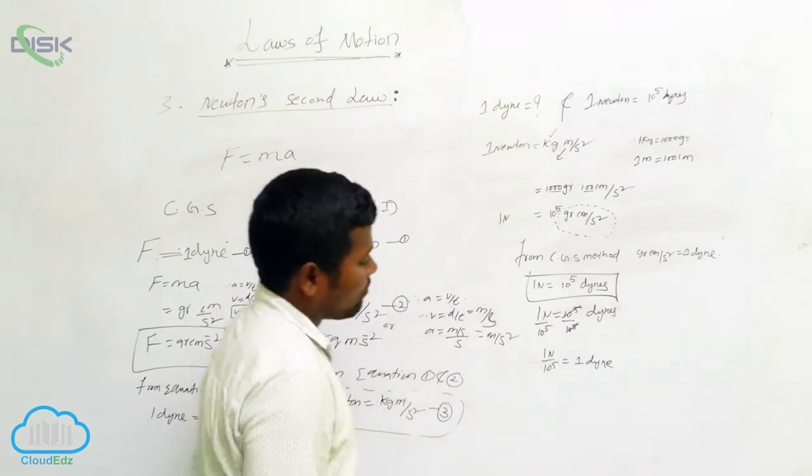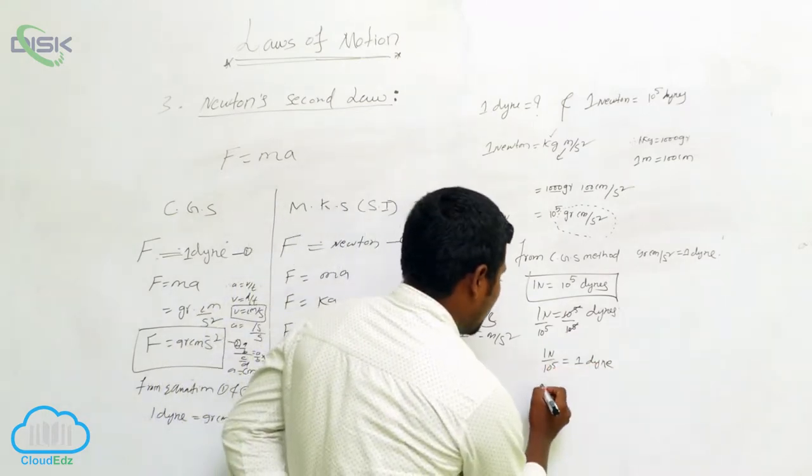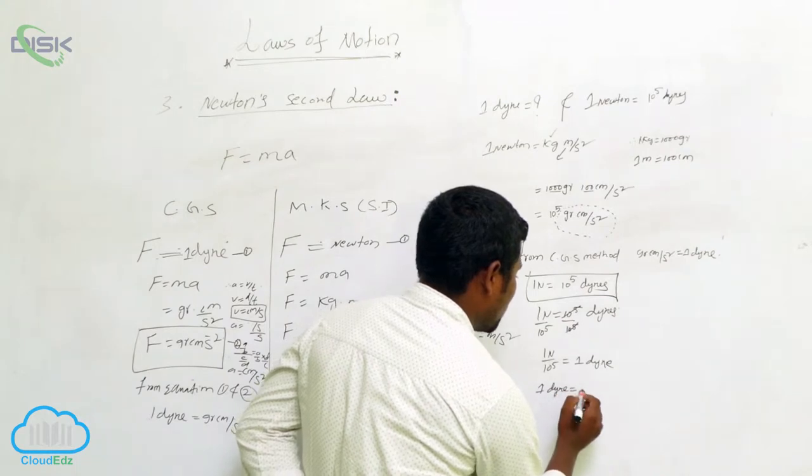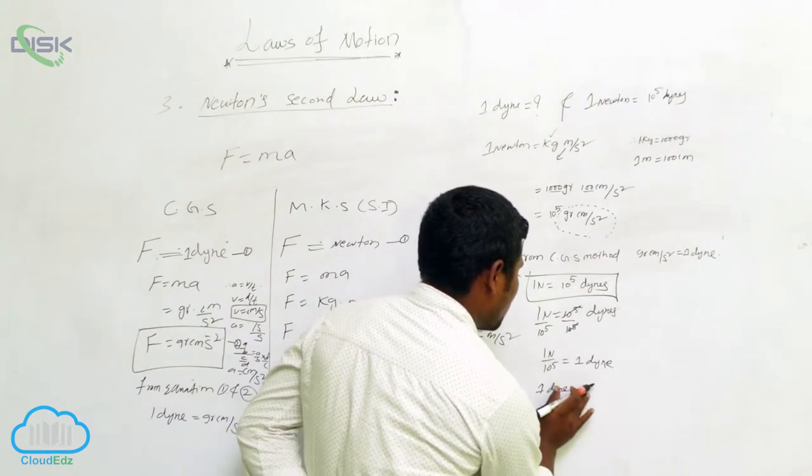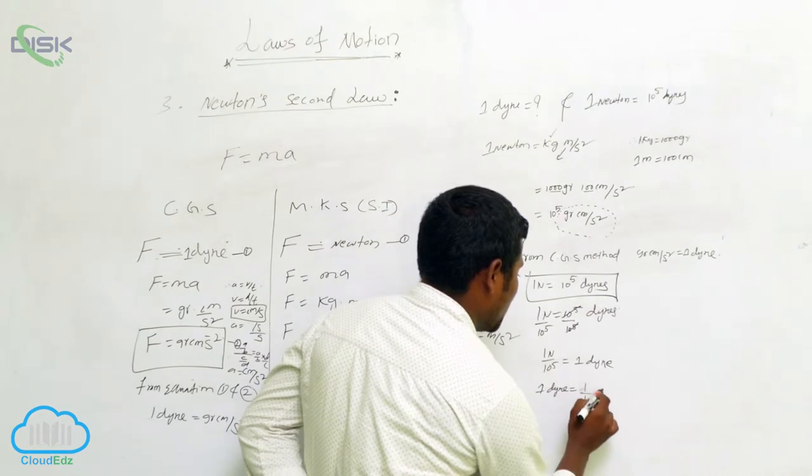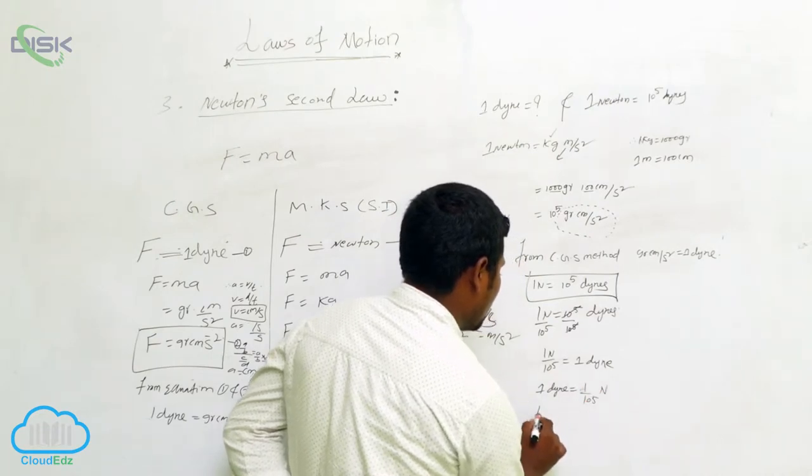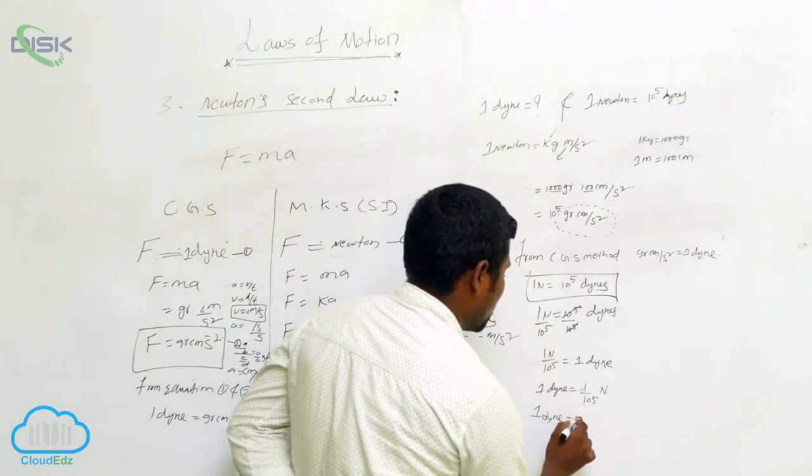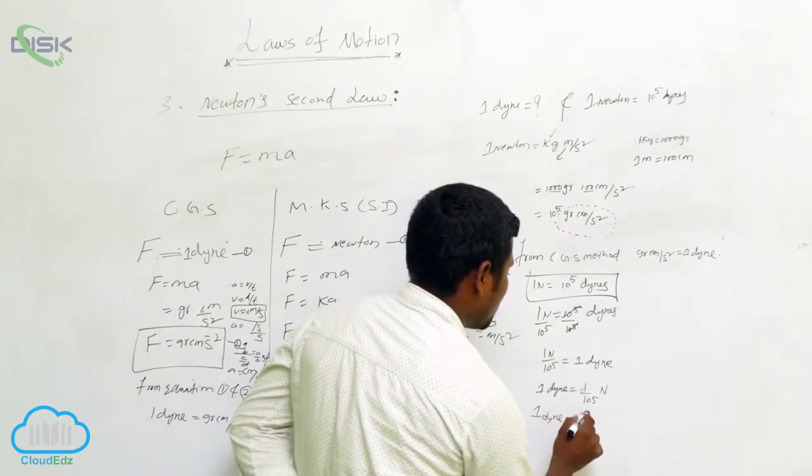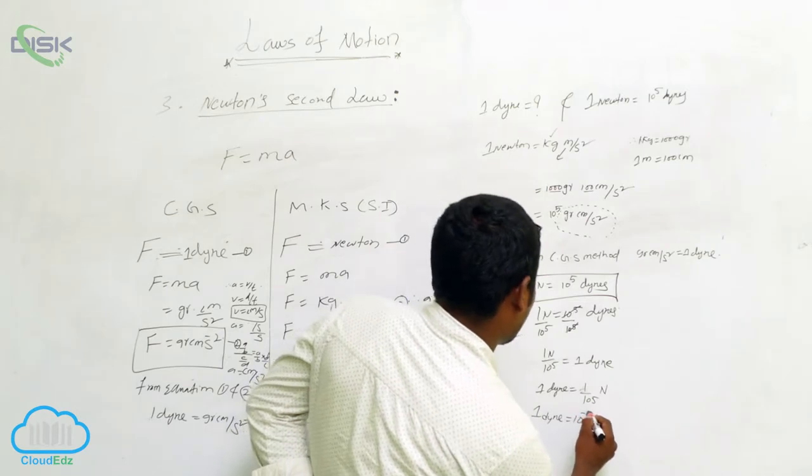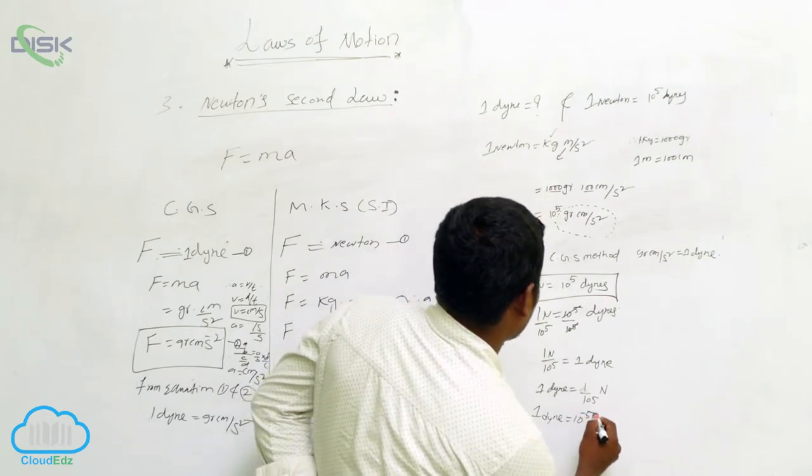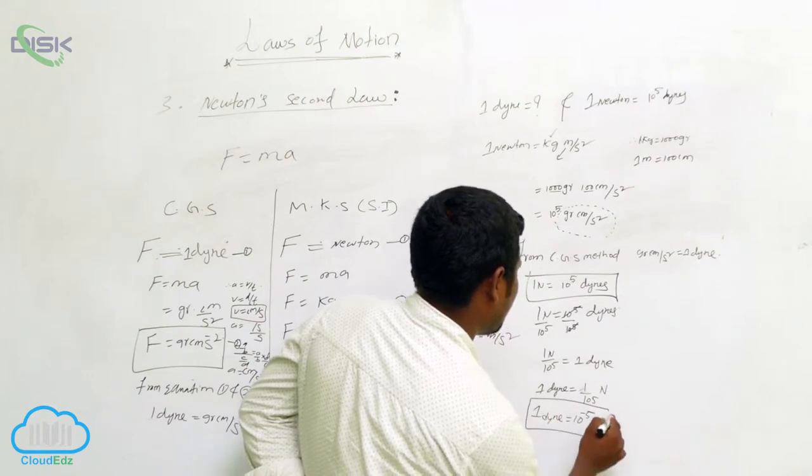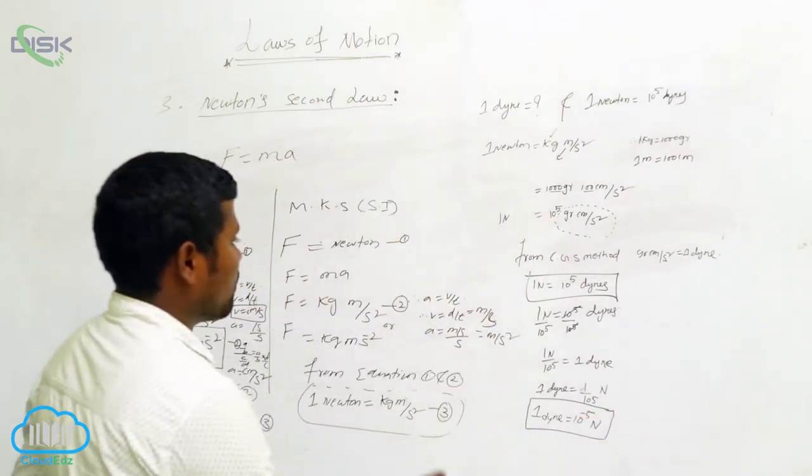This gives us 1 dynes. So then what we can write: 1 dynes is equal to 1 by 10 to the power of 5 newtons. Then 1 dynes equals 10 to the power of minus 5 newtons. This is our answer.